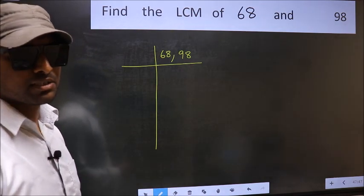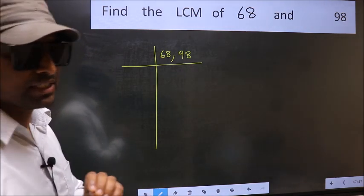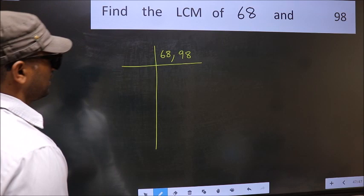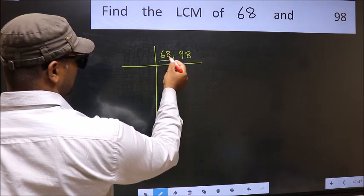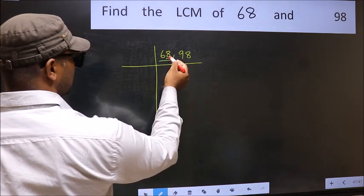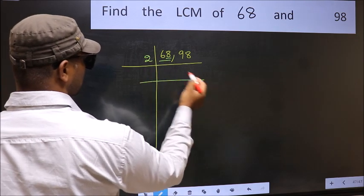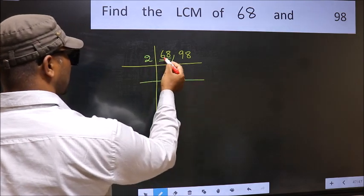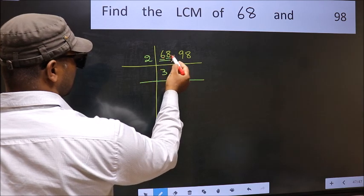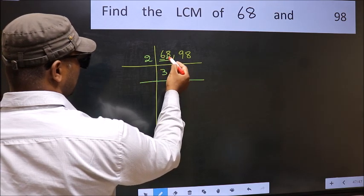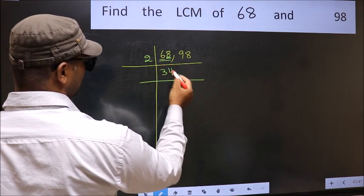Now focus on the first number, which is 68. The last digit is 8, which is even, so take 2. The first digit is 6 — when do we get 6 in the 2 times table? 2, 3, 6. The other digit is 8 — when do we get 8 in the 2 times table? 2, 4, 8.